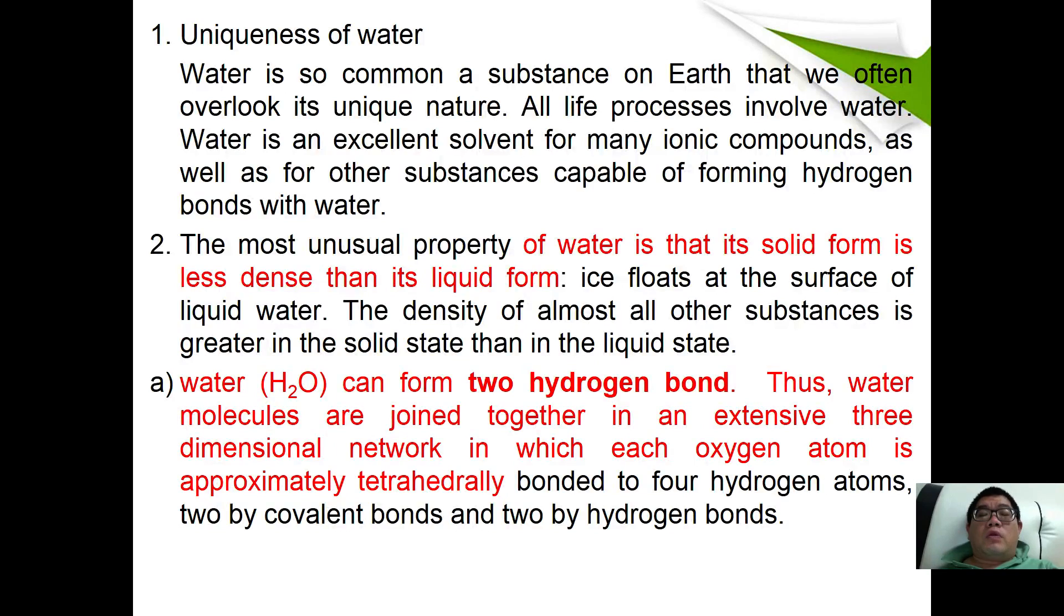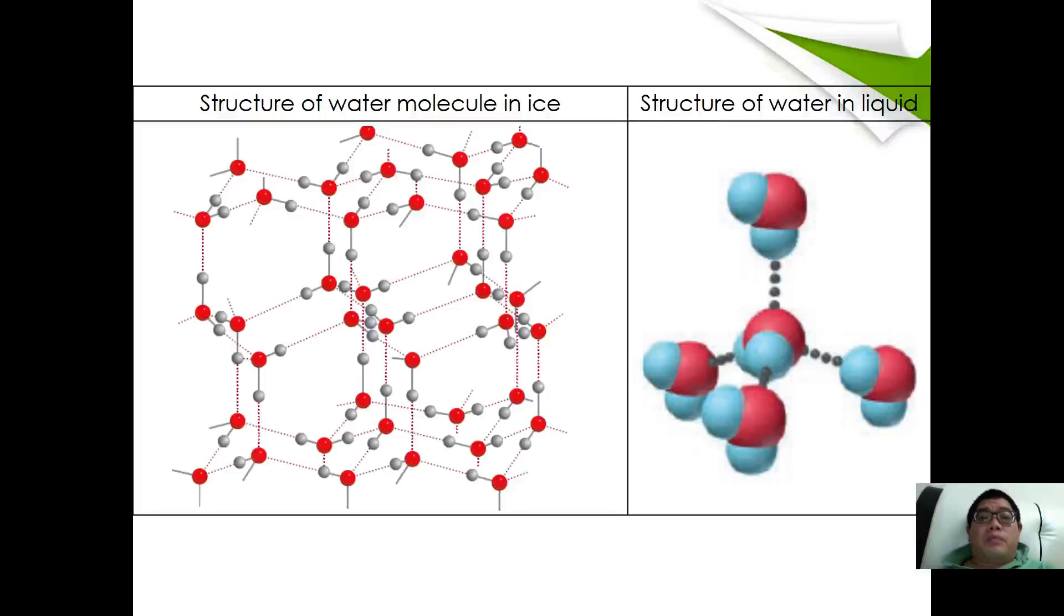We said that water can form two hydrogen bonds. Water molecules are joined together in an extensive three-dimensional network in which each oxygen atom is approximately tetrahedrally bonded to four hydrogen atoms: two by covalent bonds and two by hydrogen bonds. This is what I mean by the structure of water in ice and water as liquid. As you can see here, the ice has an open structure, while liquid has a more closed structure.